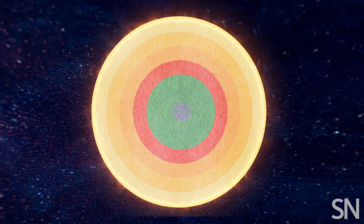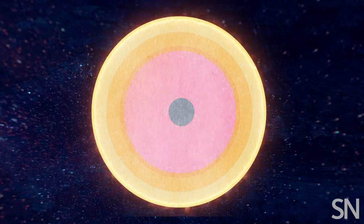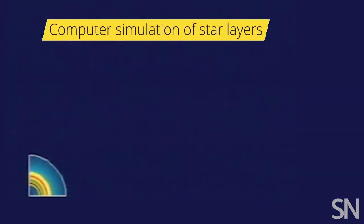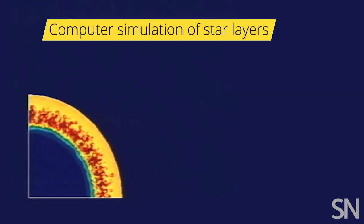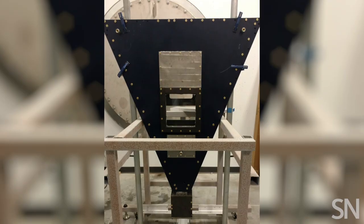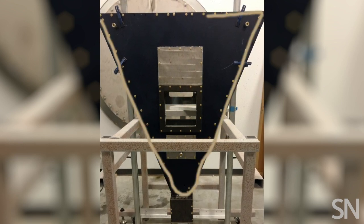When the pressure wave inside the star rams through the onion layers, elements from the star's innards are ejected. To understand how those layers behave in the early moments of a supernova, the Georgia Tech team came up with a dynamite strategy.